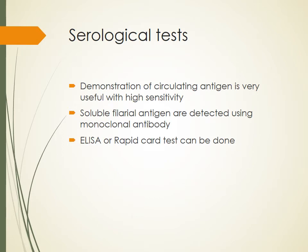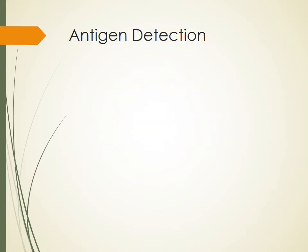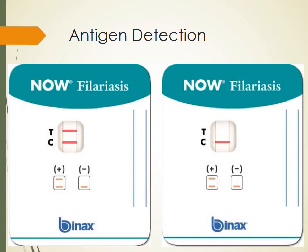In serological tests, demonstration of circulating antigen is very useful, with considerably high sensitivity. Soluble filarial antigens are detected using monoclonal antibodies by ELISA, or by rapid card tests now available for field use. In the card test, if filarial antigen is present, two bands appear — the test band and the control band. If antigen is absent, only the control band appears and the test band remains blank.